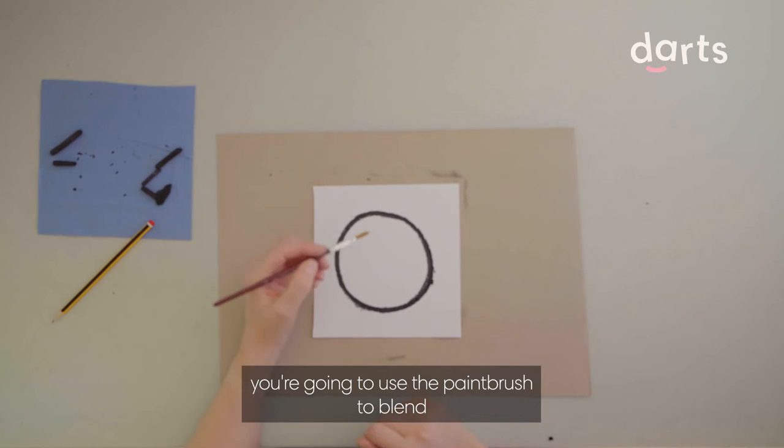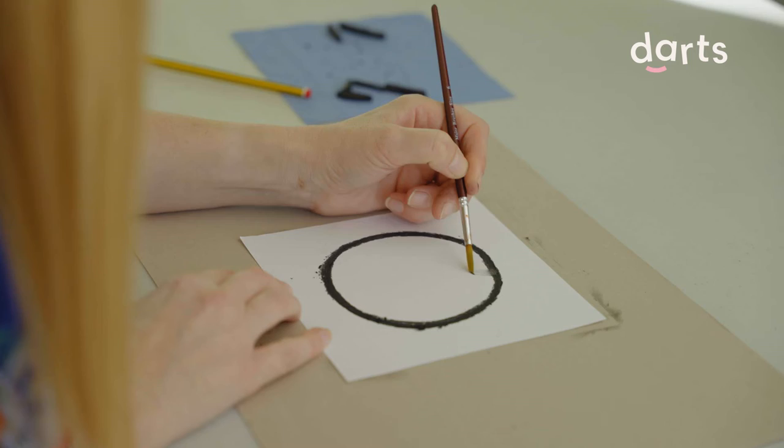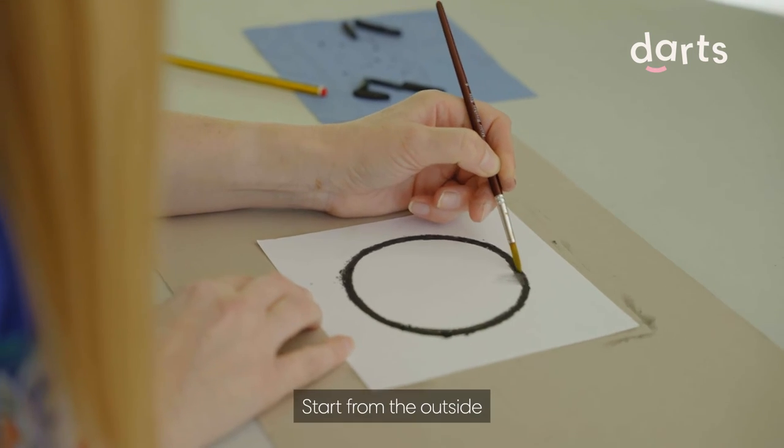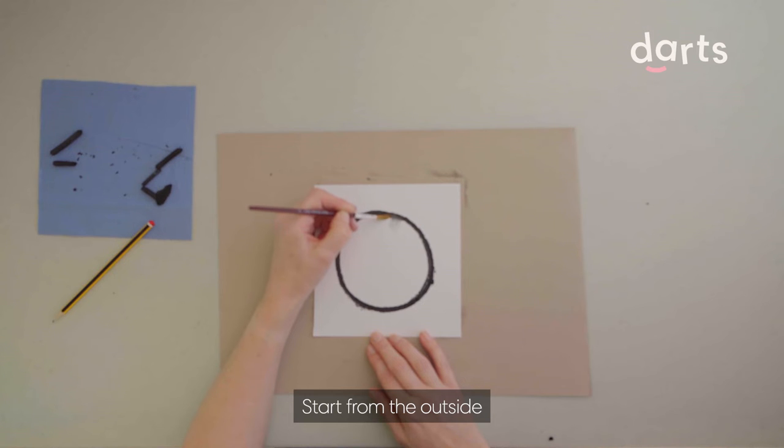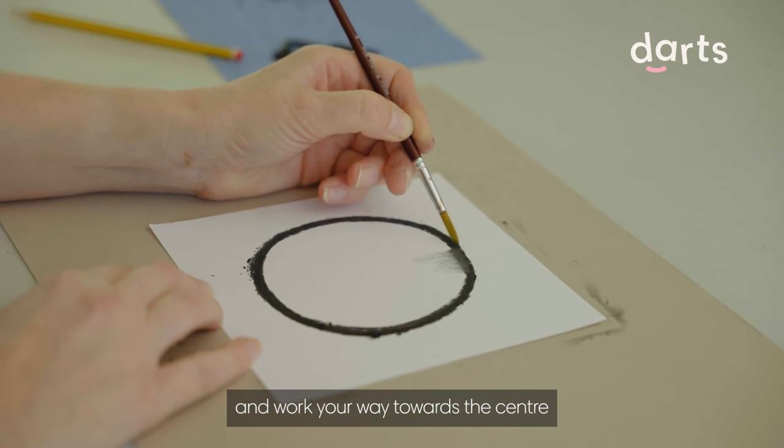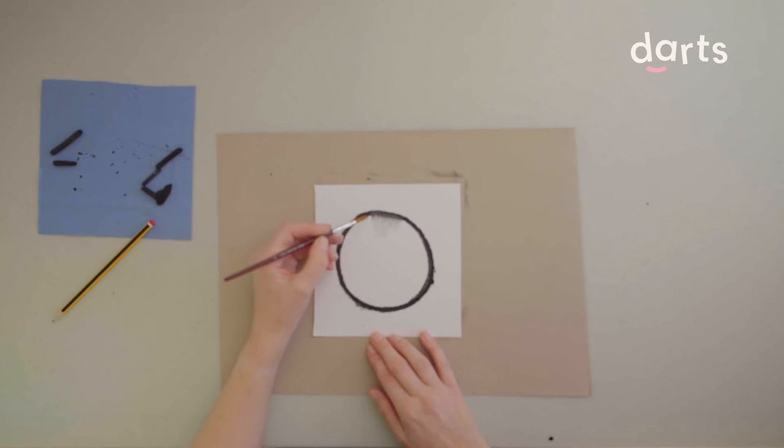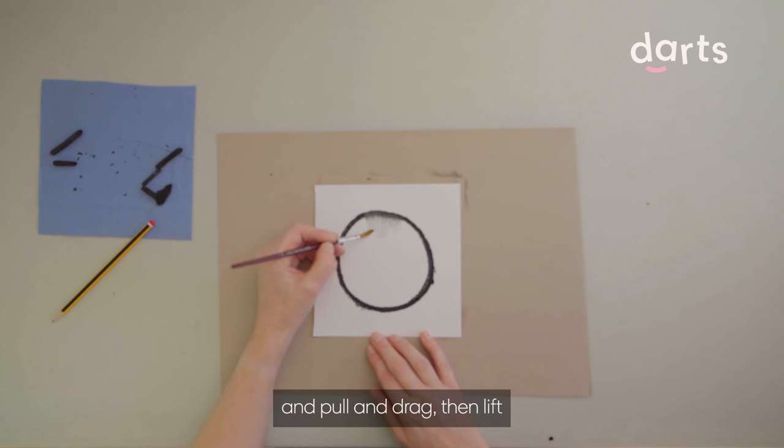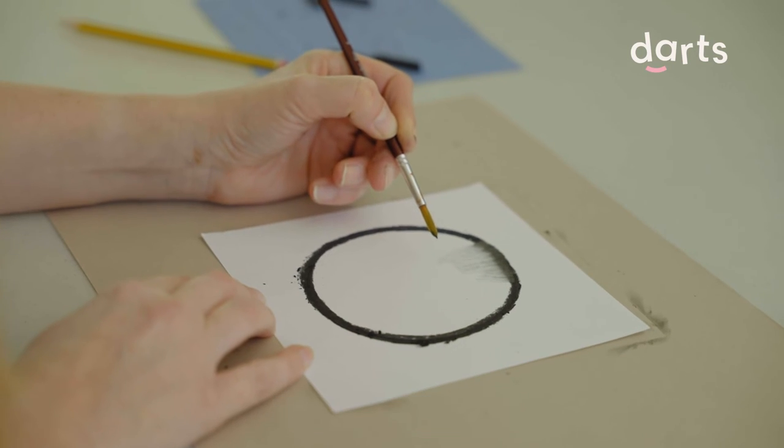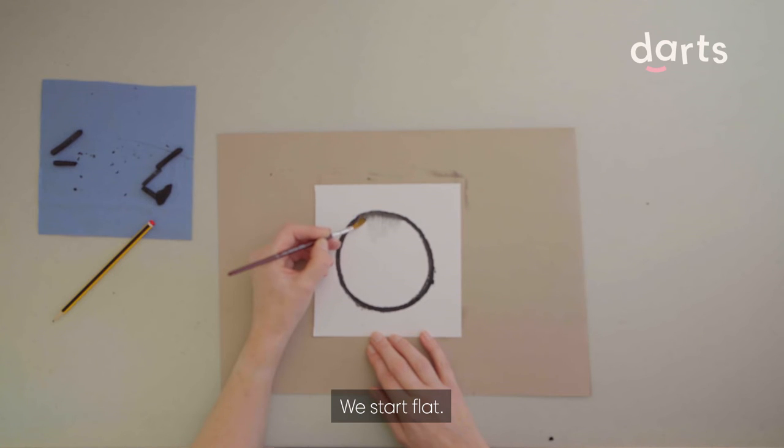Start from the outside and work your way towards the center of the circle. Hold the brush flat and pull and drag. Lift your paintbrush, restart flat, pull, and lift off.